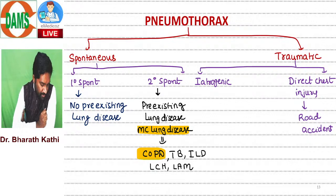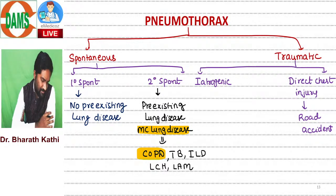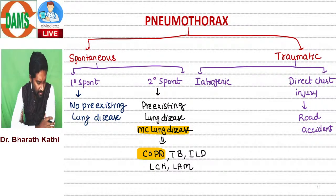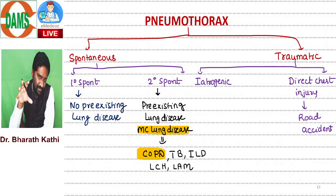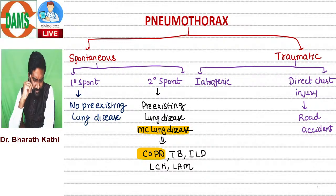Malignancy can also cause pneumothorax. There are many cavitating malignancies - for example, squamous cell carcinoma forms cavities and can cause pneumothorax. Whether malignancy causes pneumothorax depends upon the pathology; if it is a cavitary pathology, it can cause pneumothorax.